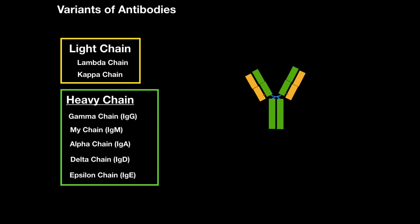Gamma, Mi, Alpha, Delta, and Epsilon chain. That stands for IgG, IgM, IgA, IgD, and IgE. Now, let's go through each and every one of these and see what their characteristics are.